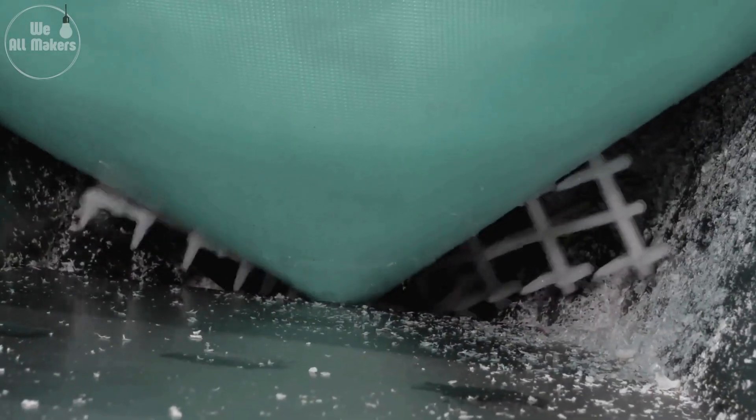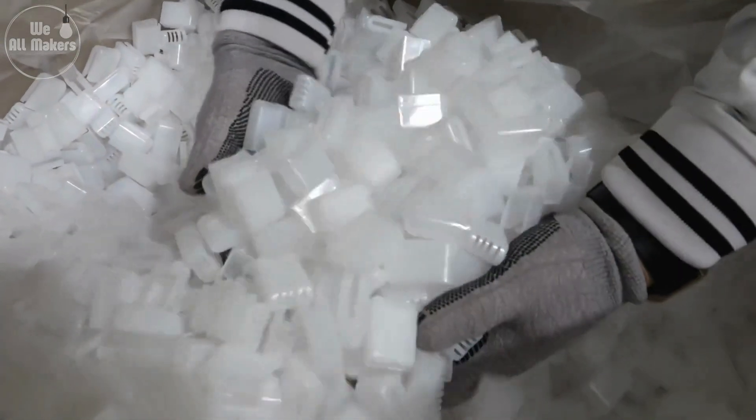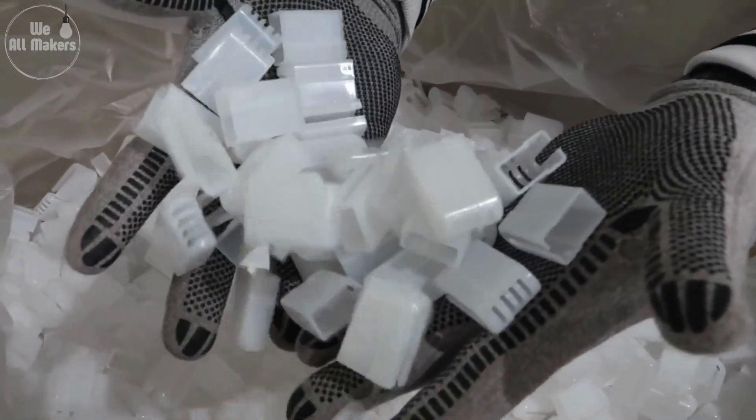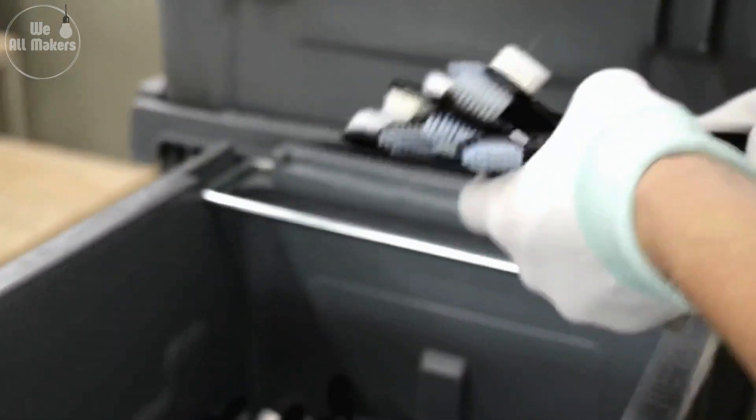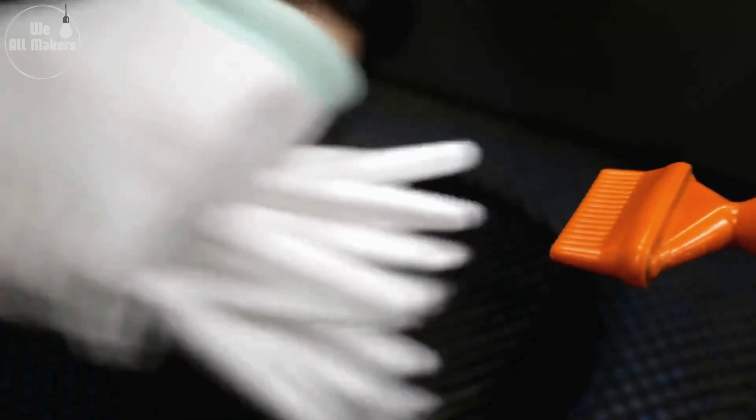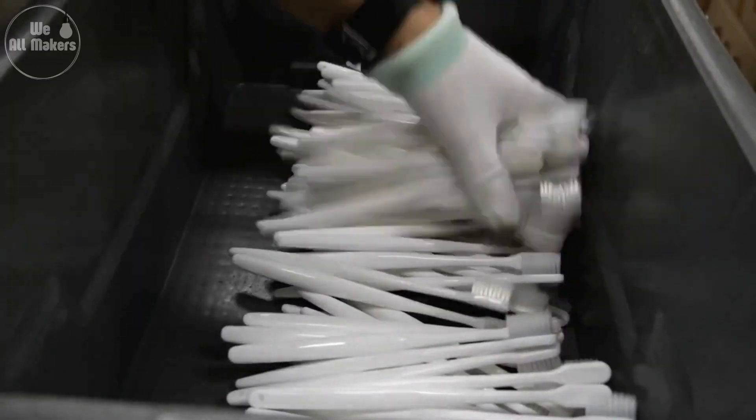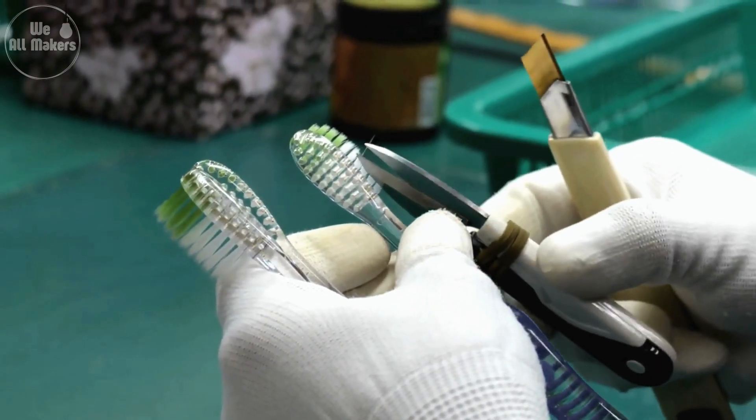When it comes to adding extra features like rubber grips or tongue scrapers, it's all about making your brushing experience as comfortable and effective as possible. But did you know that the placement of these features is carefully designed based on human ergonomics? The rubber grips, for example, are strategically positioned to fit naturally in your hand, giving you better control while brushing.